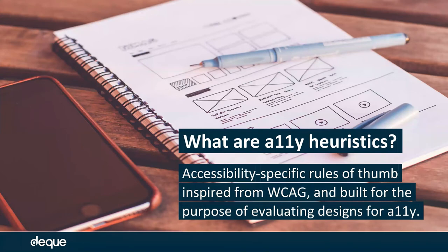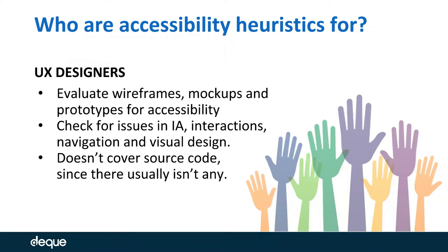So those accessibility heuristics — same idea — are general rules of thumb about accessibility, specifically accessibility evaluation in the context of design: wireframes, mockups, prototypes — everything that comes before the actual coding phase. None of what I'm going to talk about covers actual code, because at this point there usually isn't any source code yet. We're working basically with visual elements. The idea is mostly aimed at designers as a starting point, though understanding these heuristics is beneficial for anyone involved in the overall development life cycle.